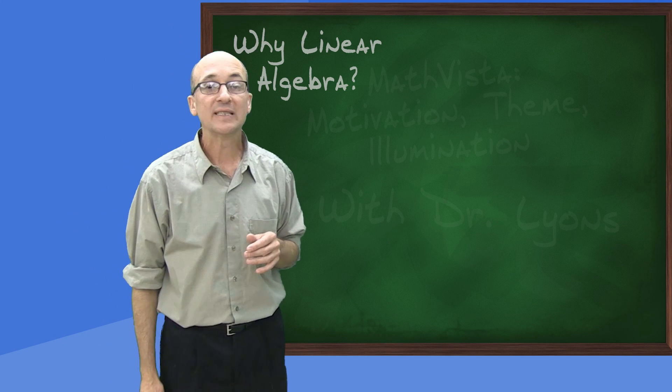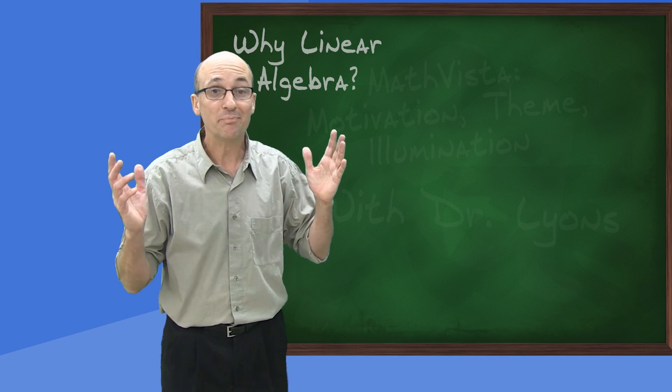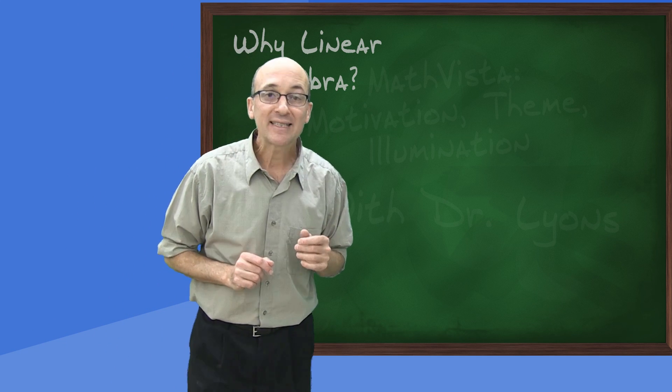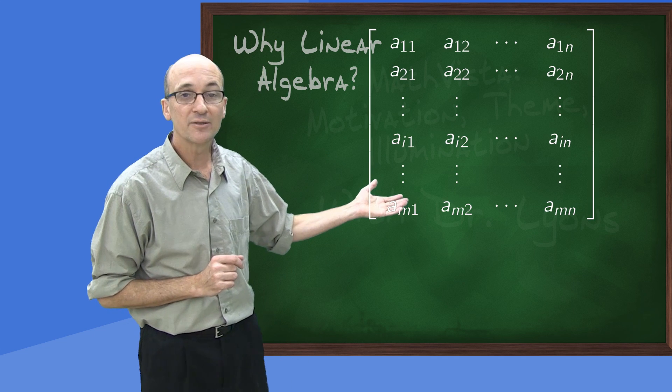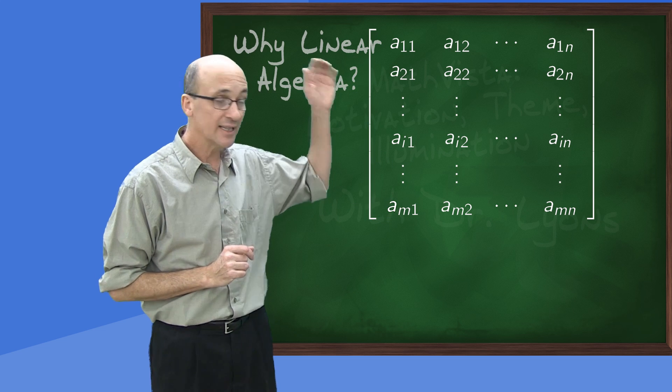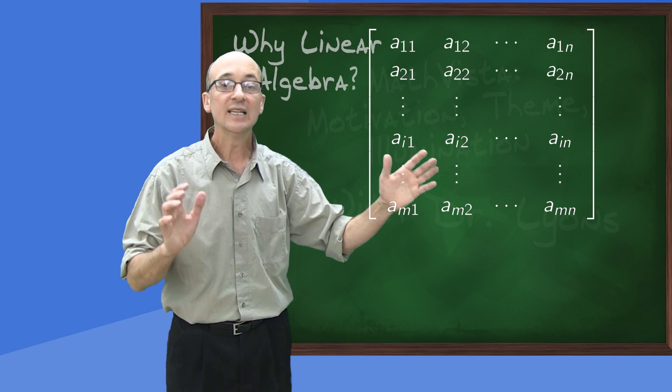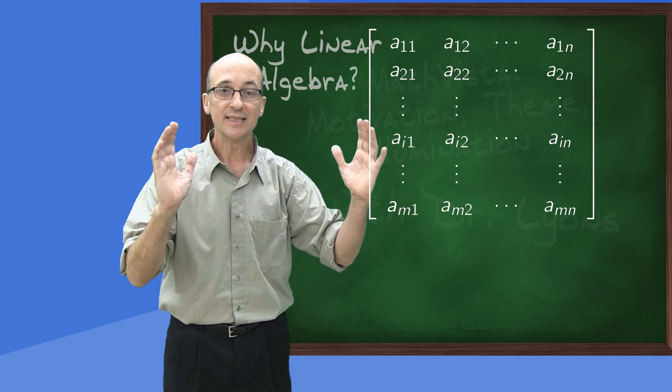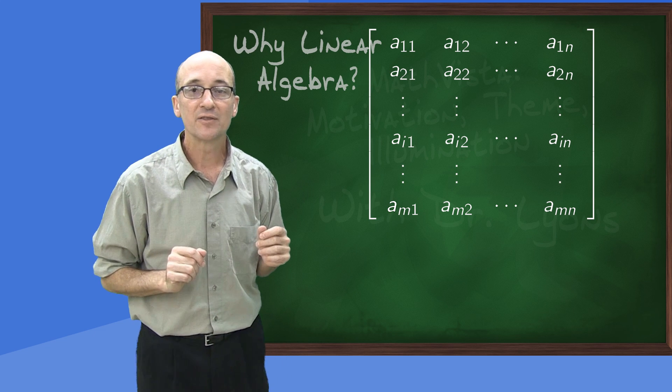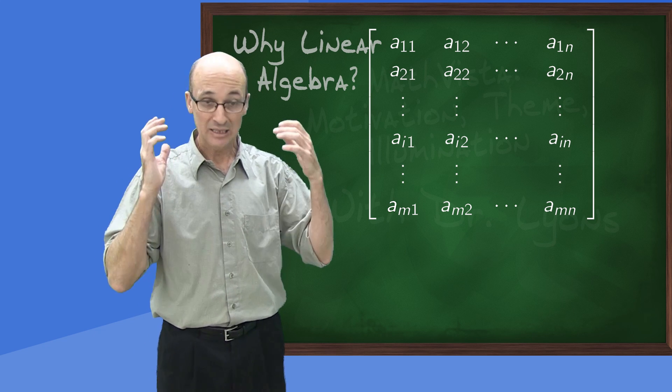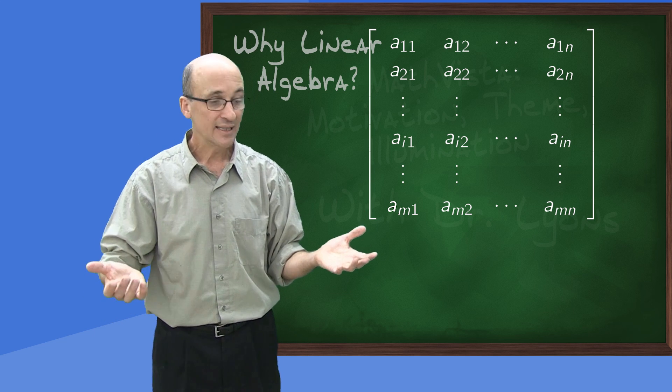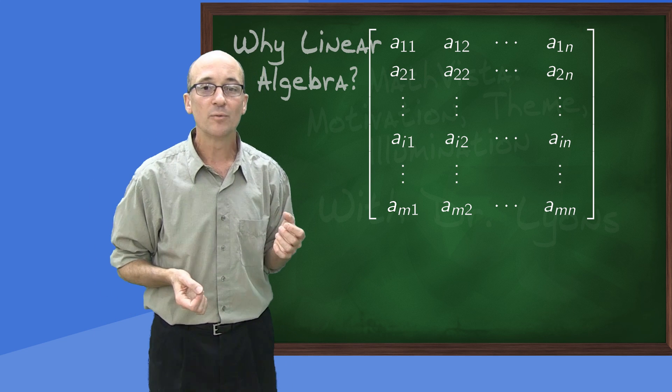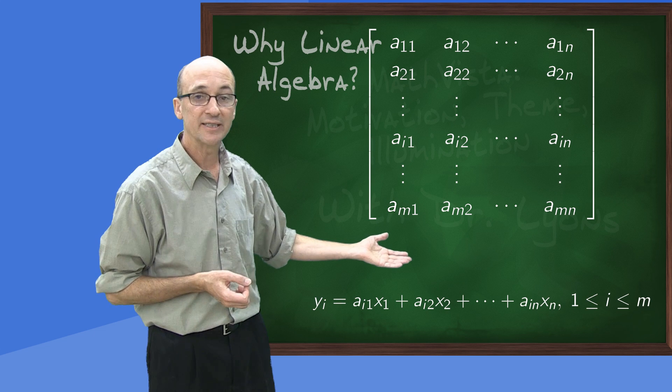The data of a linear map is neatly encoded, you could say boxed up, in a rectangular array of constants called a matrix. So we take all those a's with their two subscripts, lay them out in rows and columns, and that becomes the collection of numbers that stands for the linear map. And what does that linear map do? It takes the x1 through xn's and turns them into the y1 through ym's according to these equations.